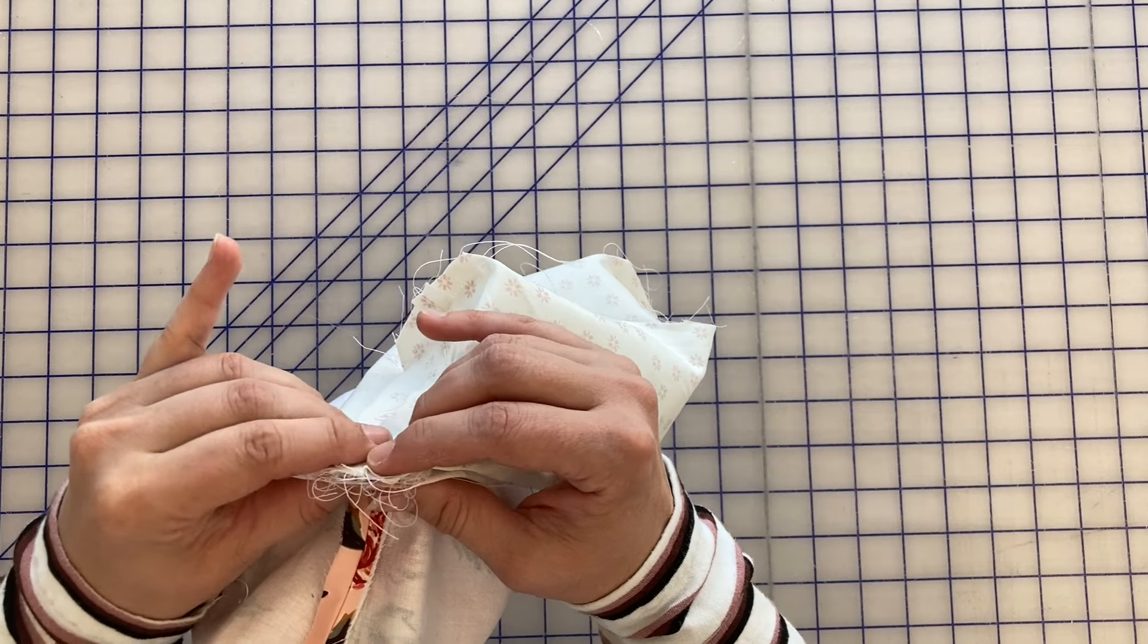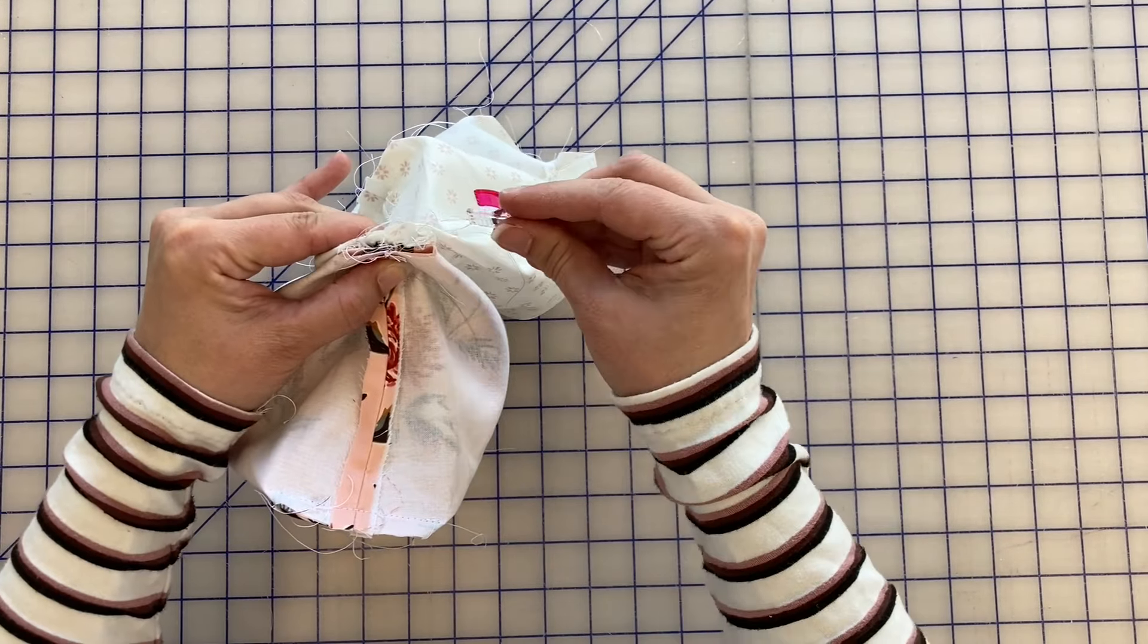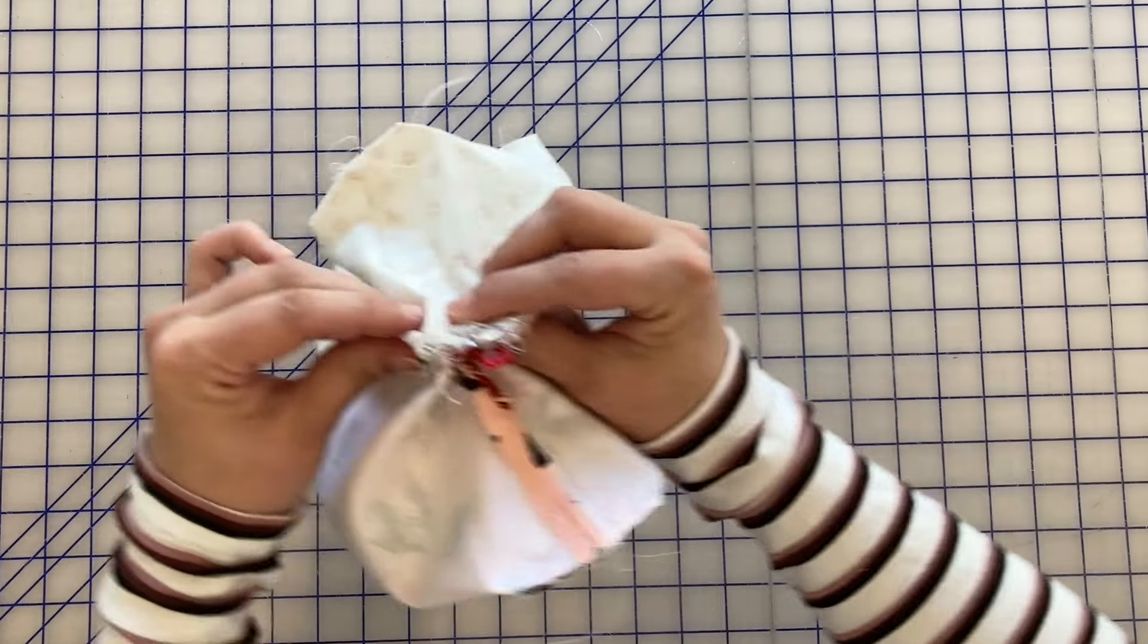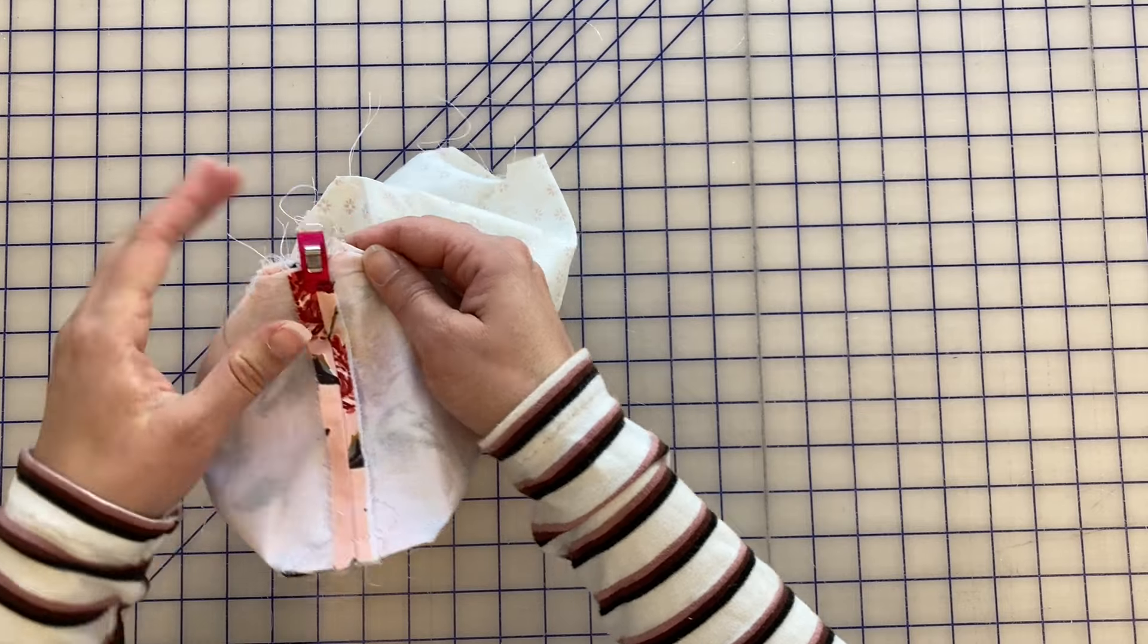And then make sure your seams are open. It's okay if it looks a little messy, it's just going to be on the inside. Okay, so I've got those all in place and I'm going to take it to the machine and sew 3/8 of an inch across there.